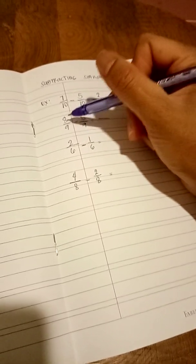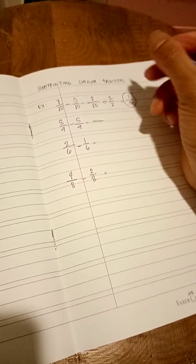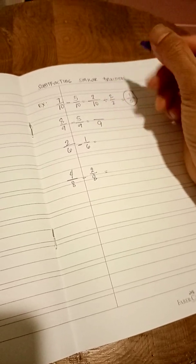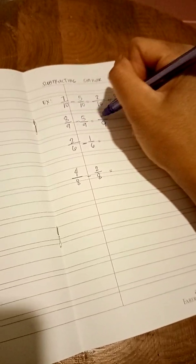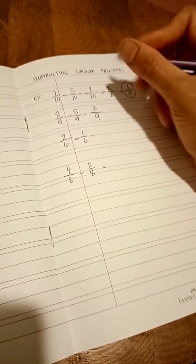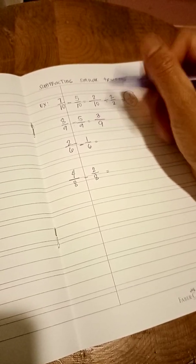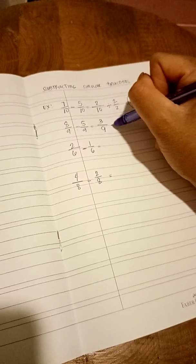Here, we have 8 over 9 minus 5 over 9. Let's copy the denominator, which is 9. And we proceed to 8 minus 5 equals 3. Can we simplify this? Yes. We can simplify it by using the number 3.